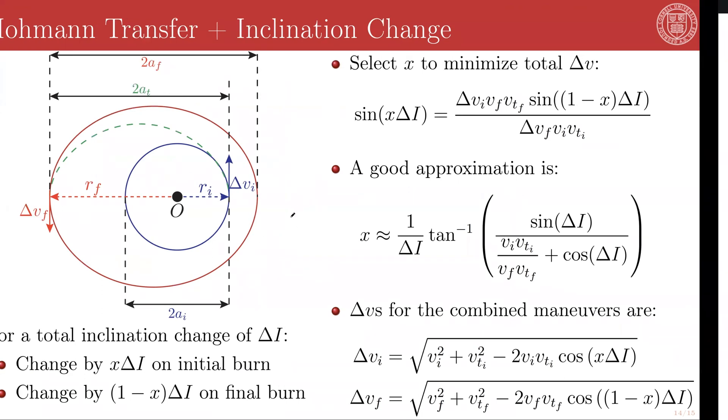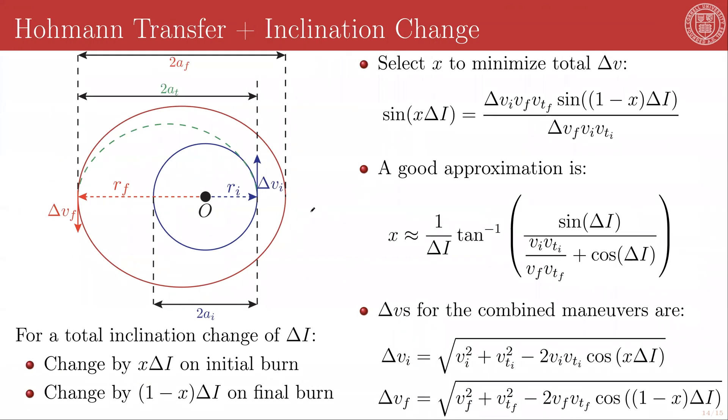What we're setting up here with the initial burn, for example, is another triangle that looks like this. We have our initial velocity vector, we apply some delta V as a vector, and we get our transfer velocity vector. And this is at the angle delta I from your initial velocity vector, if you're doing the full inclination change here.